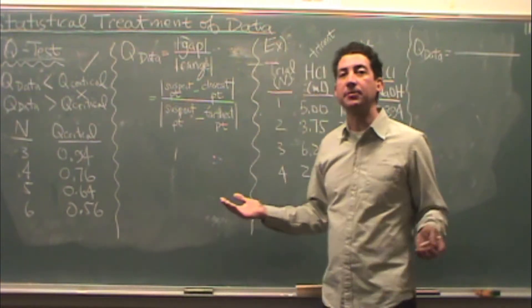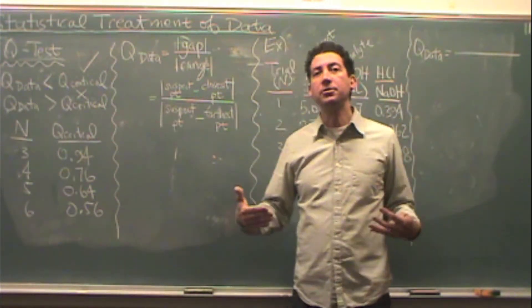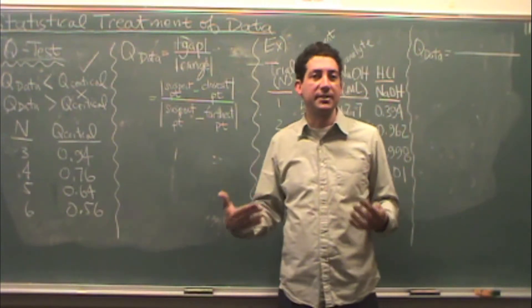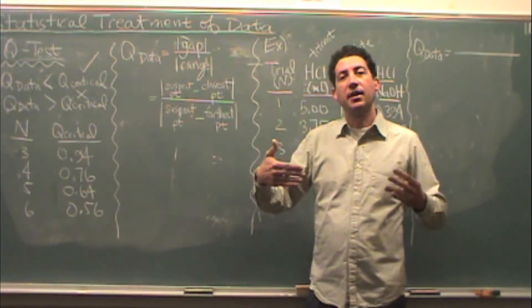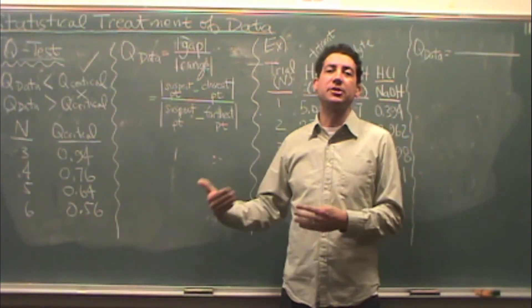This will often need to be checked when you have a suspect point. So the Q test tells you if your suspect data is actually a valid point or a point that should be thrown out.